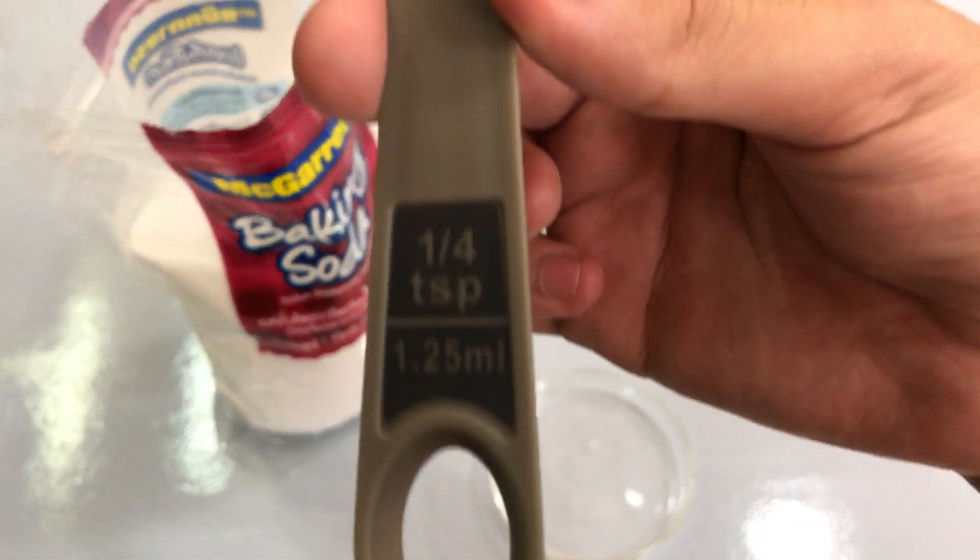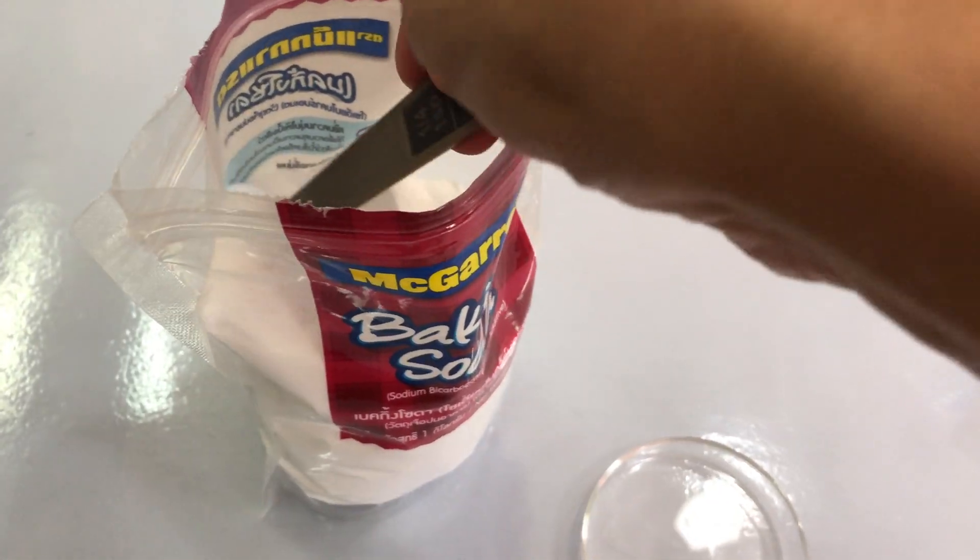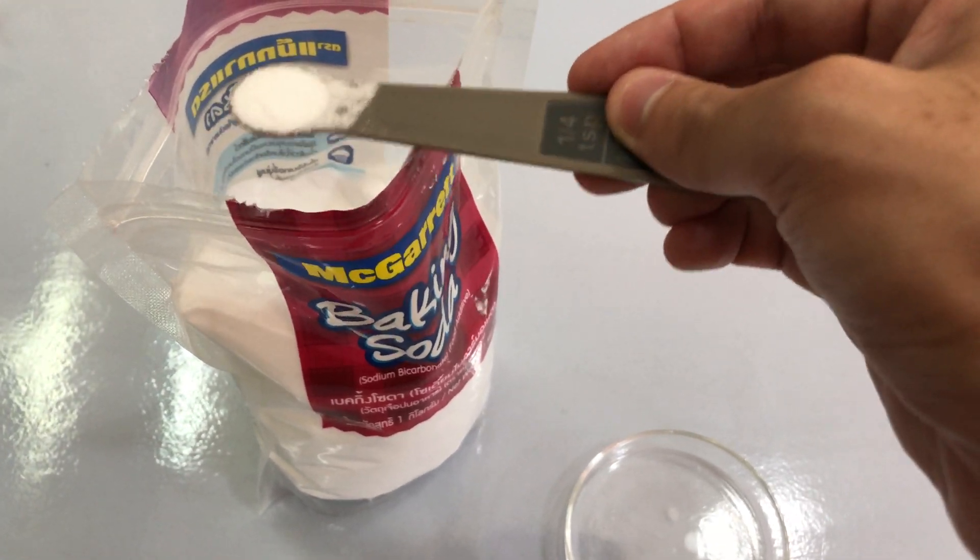Next step, we will use a measuring spoon, 1/4 teaspoon, to prepare sodium bicarbonate, or as we call it, baking soda.